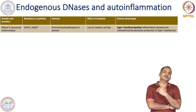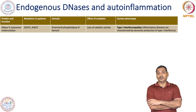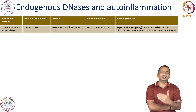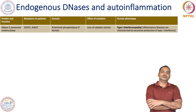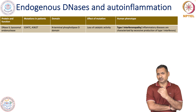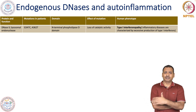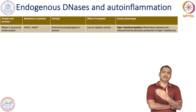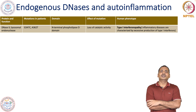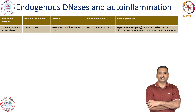If you remember the previous session when I was discussing RLR, I mentioned that persistent production of type 1 interferon results in a generalized inflammatory condition. The same thing is happening here: a mutation in DNase 2 causes overproduction of type 1 interferon.